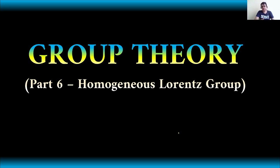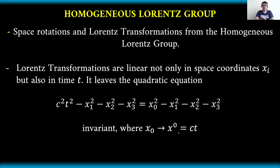The homogeneous Lorentz group actually includes space rotations and Lorentz transformations. These are very useful, especially in modern physics, where we are dealing with inertial frames and special relativity by Albert Einstein. Lorentz transformations are linear, not only in space coordinates Xi, but also in time.